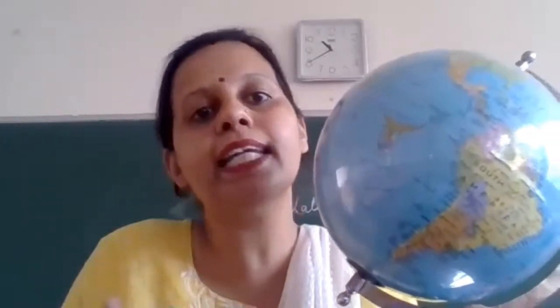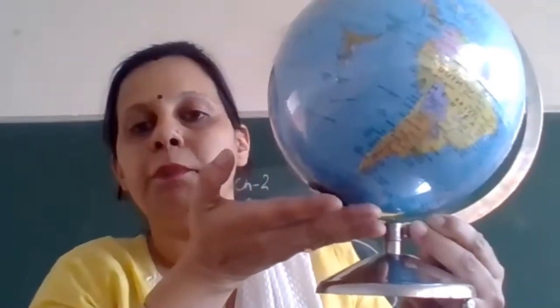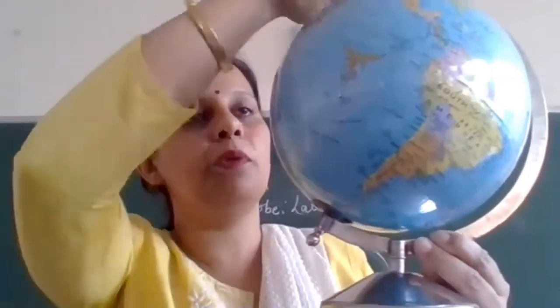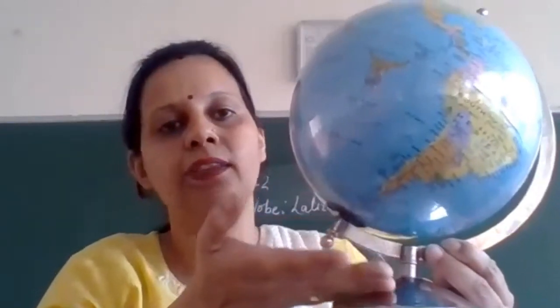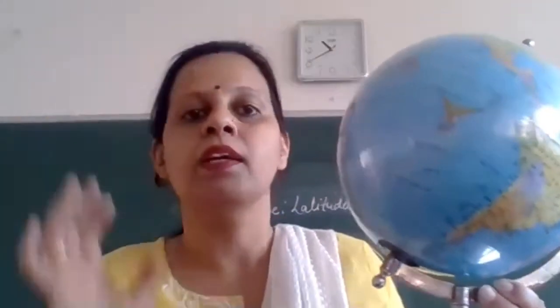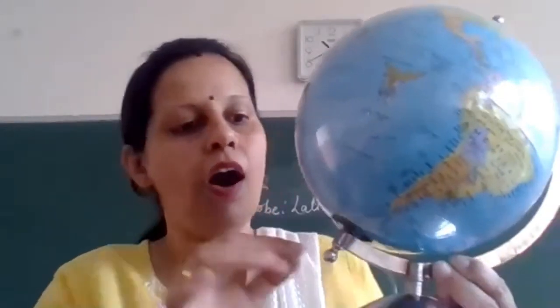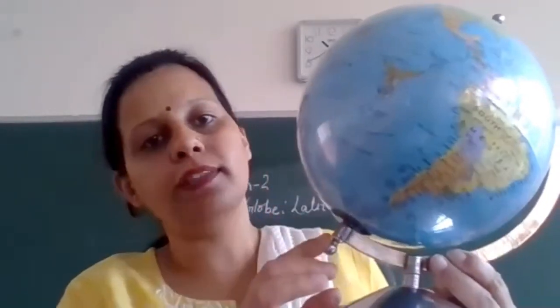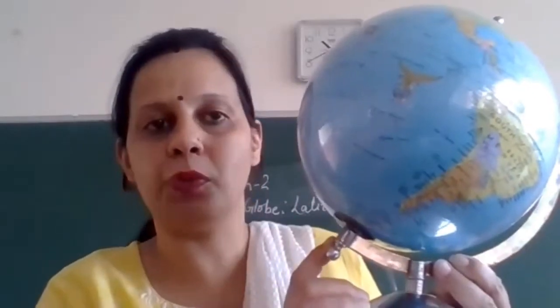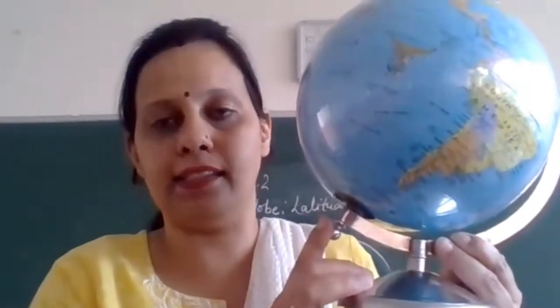We say the earth is spherical, but it's not exactly spherical because it is flattened from the poles — the North Pole and the South Pole — and it is bulging from the center. We have already covered that. On this globe, there is a needle passing through the North Pole and South Pole that acts like the axis.